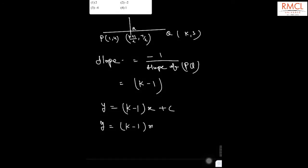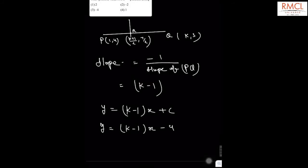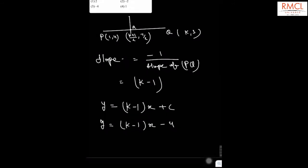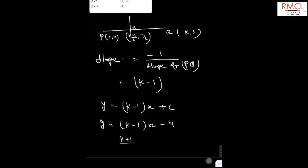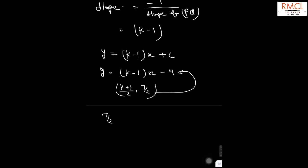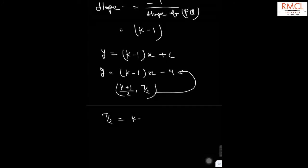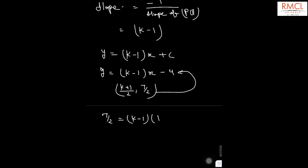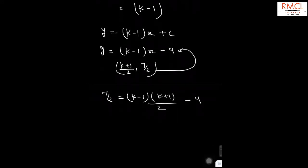Now we know that it passes through the point (k+1)/2, 7/2. So if we put this point in this equation, then we will have 7/2 equals (k-1) multiplied by (k+1) divided by 2 minus 4.